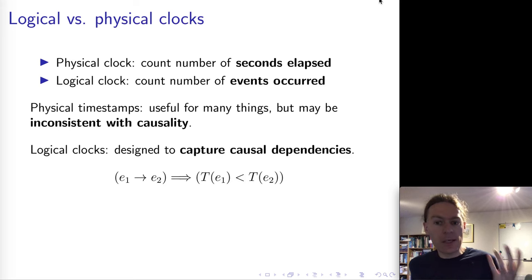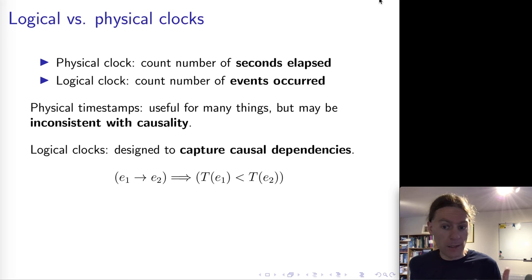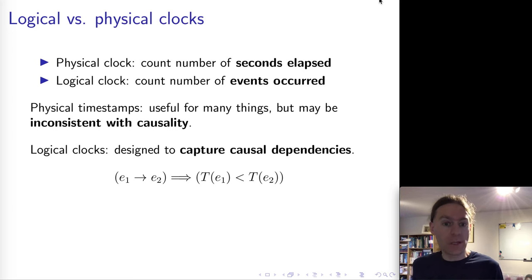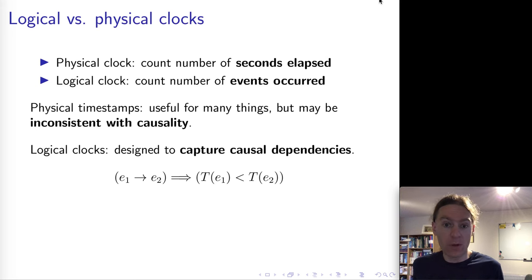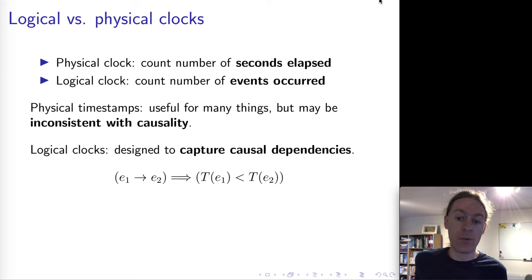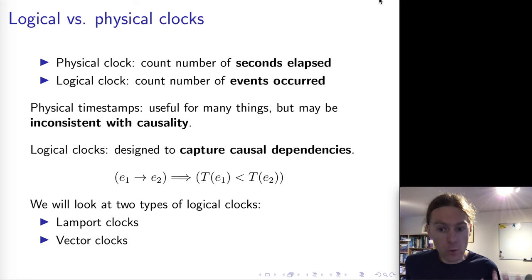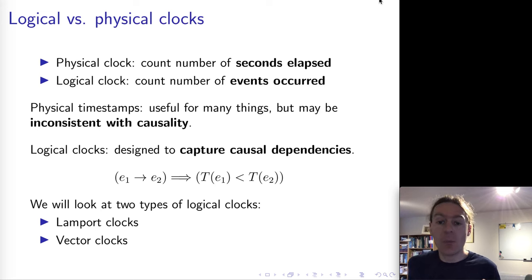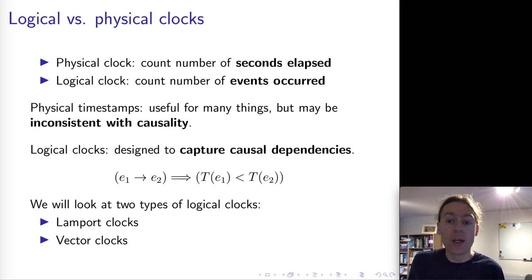The key thing we want of a logical clock is that it captures causality — it captures the happens-before relationship. In particular, if event 1 happened before event 2, then we want the timestamp of event 1 to be less than the timestamp of event 2. This is the minimum basic requirement of our logical clocks. We're going to look at two different constructions: Lamport clocks and vector clocks. Both satisfy this need to capture causality, but they have slightly different properties in other areas.